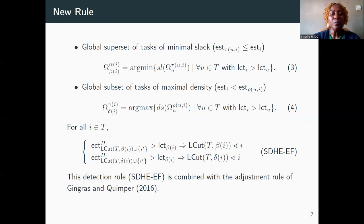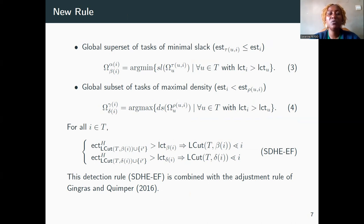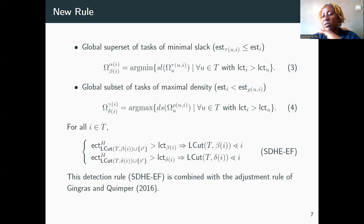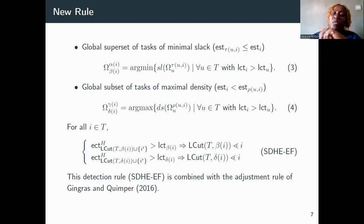Let's formalize our rule. For a given task I, the global superset of tasks of minimum slack is specified by relation three. Similarly, the global subset of tasks of maximum density is specified in relation four. The upper bounds of these two task intervals are used to specify the potential age-finding task interval. The application of the profile on these intervals leads to the new detection rule, combined with the adjustment rule of Gingras and Kimper, also called the Slack Density Horizontally Elastic Age-Finding rule.